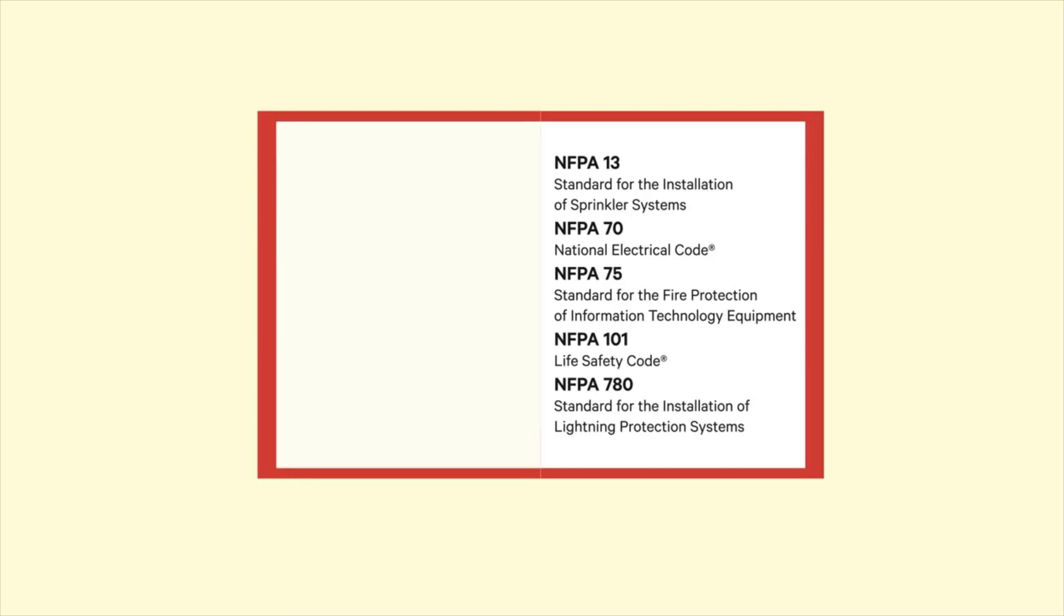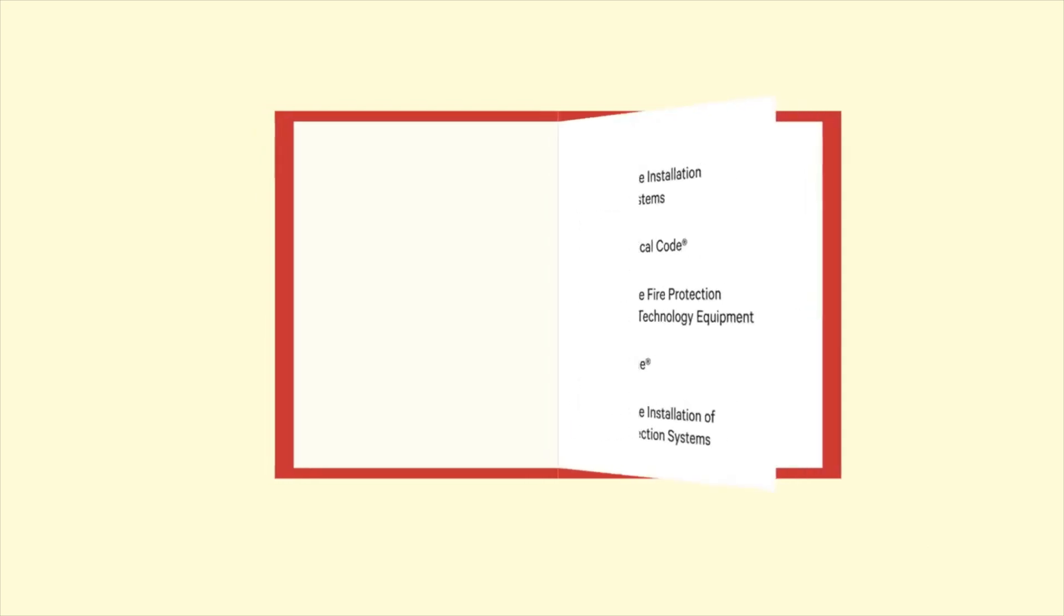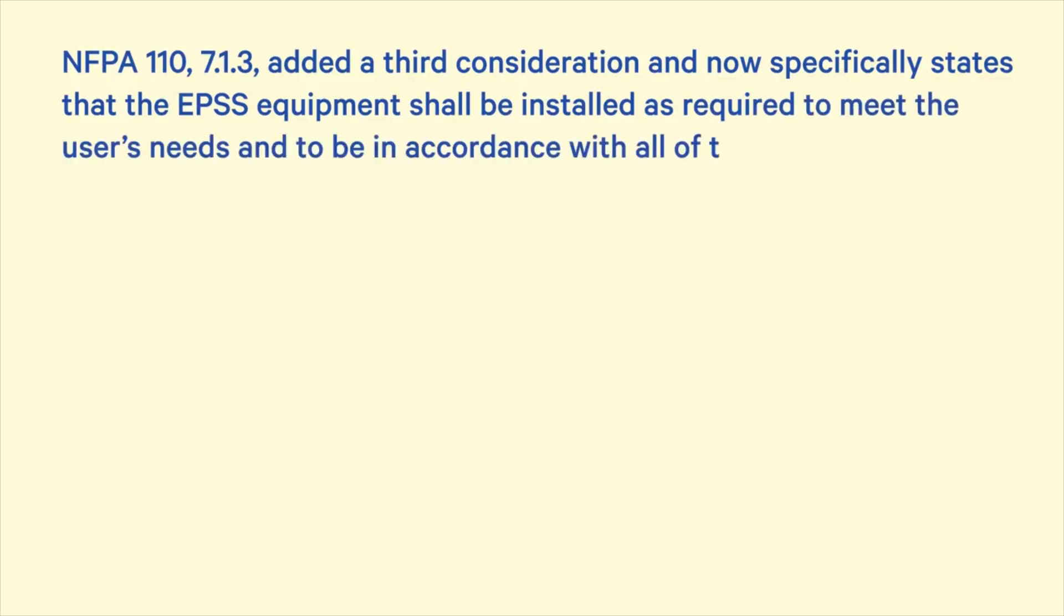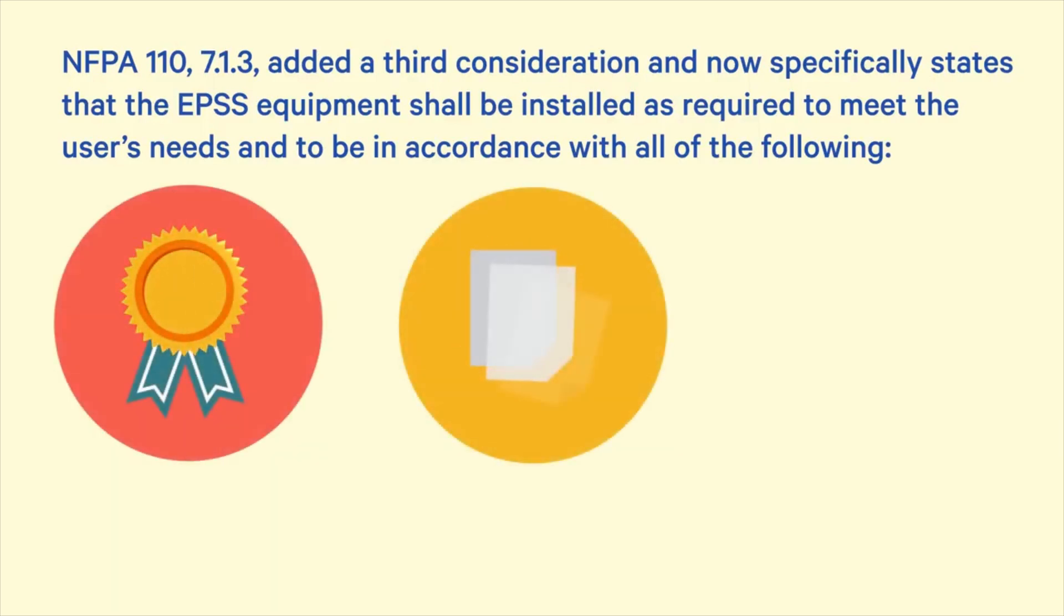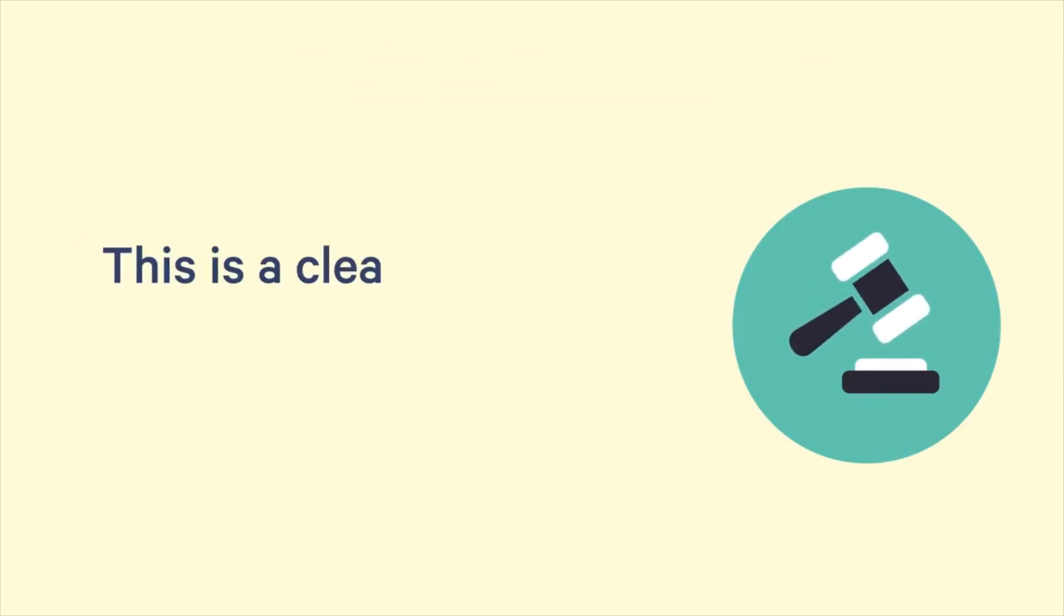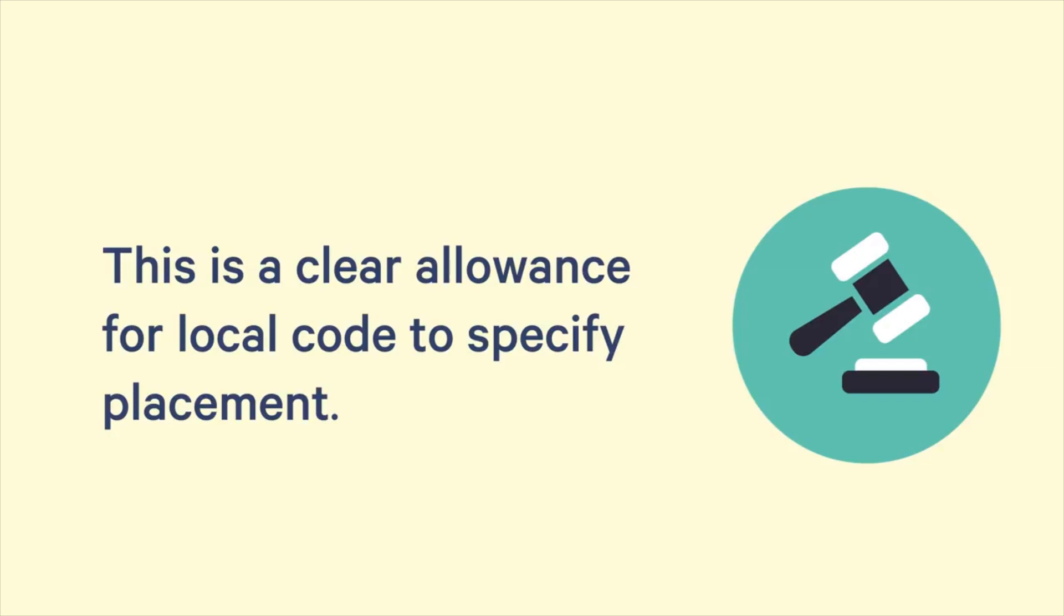Prevailing NFPA codes still call for consideration for local needs. NFPA 110 7.1.3 added a third consideration and now specifically states that the EPSS equipment shall be installed as required to meet the user's needs and to be in accordance with all of the conditions: this standard, the manufacturer's specification, and the authority having jurisdiction. The addition of the authority having jurisdiction is a clear allowance for the local code to specify placement.